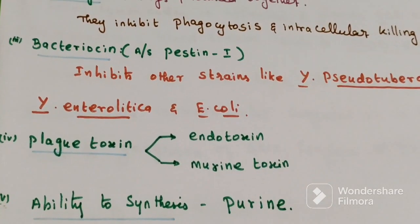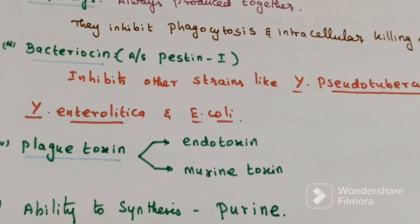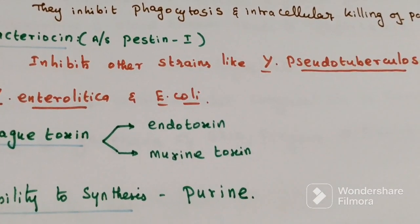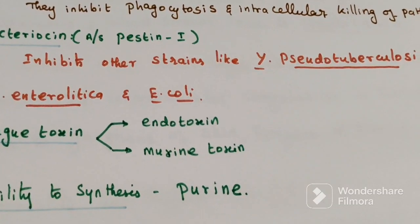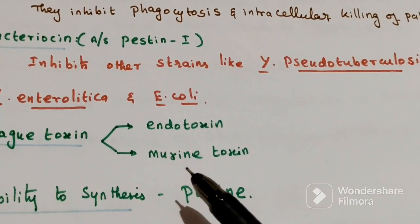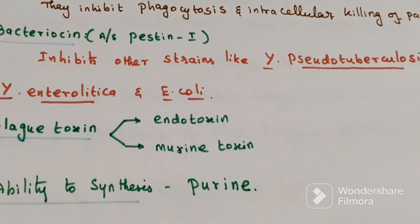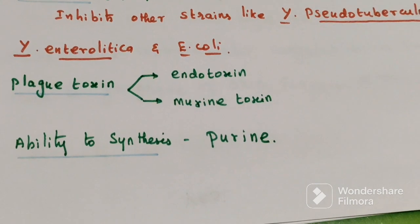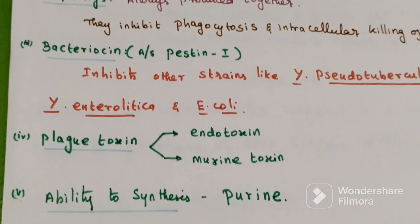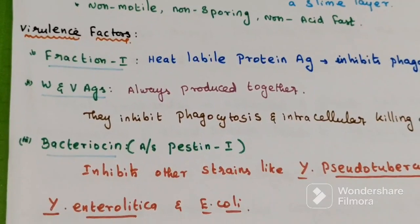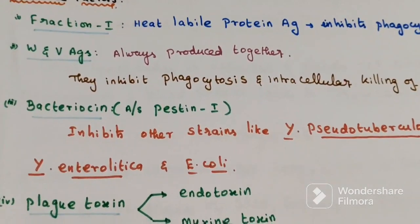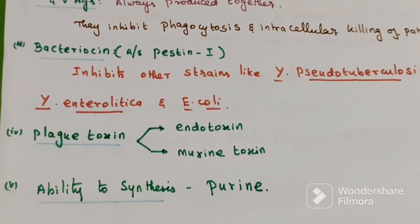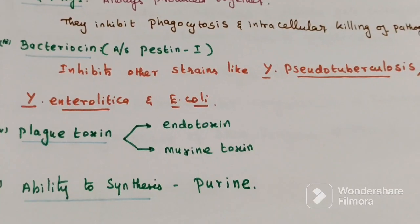Fourth virulence factor is Plague toxin, made of two toxins: endotoxin and murine toxin. Endotoxin is a lipopolysaccharide. Murine toxin is active in rats. Another virulence factor is the ability to synthesize purine. The virulence factors are: Fraction I, W/V antigen, Bacteriocin (also called Pesticin), Plague toxin, and ability to synthesize purine.